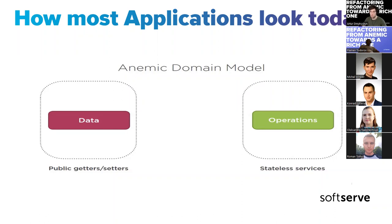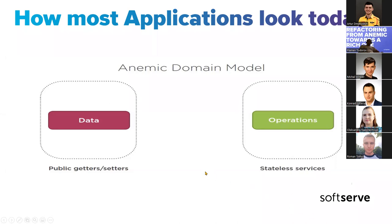When we start to talk about domain models, we usually have two options. One is to have data — some classes with public getters and setters — and we have operations that use this data. Operations usually keep some business logic that is performed over our data. This kind of model is the so-called anemic domain model.